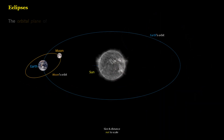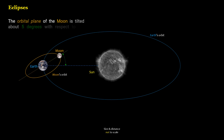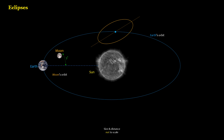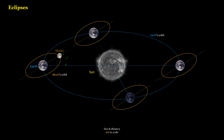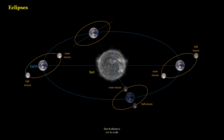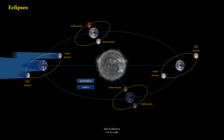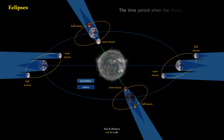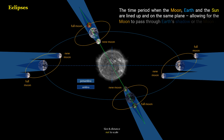The orbital plane of the moon is tilted about 5 degrees with respect to the Earth's orbital plane. The time period when the moon, Earth, and the sun are lined up and on the same plane, allowing for the moon to pass through Earth's shadow or the moon to cast a shadow on Earth, is called an eclipse season.